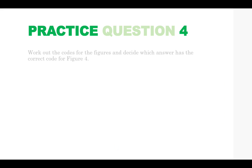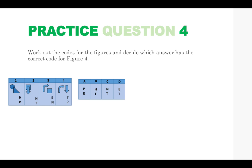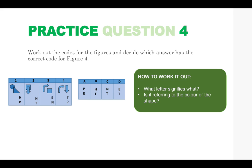Practice question 4. Work out the codes for the figures and decide which answer has the correct code for figure 4. So here are your codes. We've got two shapes in each box and we have two letters and they're representing either the shape or the colour. As you can see we have a square in box 2 and in box 3 and the letters N, T, E, N. So you know that the N is referring to the square. So we know that the E for this one is referring to this. So we know that that shape in box 4 is going to be the same letter. So that would be an E.